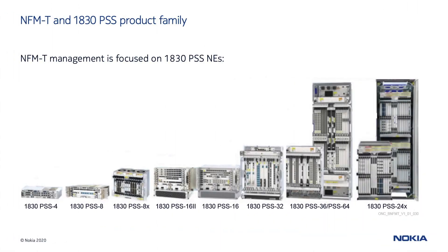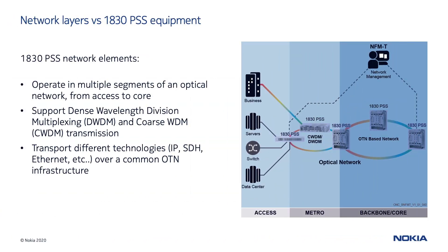NFMT is the Nokia Optical Network Management System and is focused on the 1830 equipment family, even though it can support other network element types. NFM stands for Network Function Manager, while T stands for Transport. 1830 PSS equipment can operate in multiple optical network segments, from the customer's premises to the core. These nodes can transport several transport technologies, such as IP, SDH, Ethernet, and so on, over a common optical transport network infrastructure in a wavelength multiplexing technology.